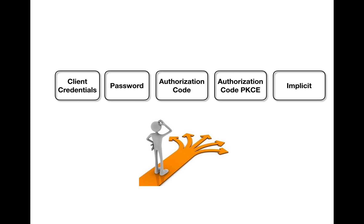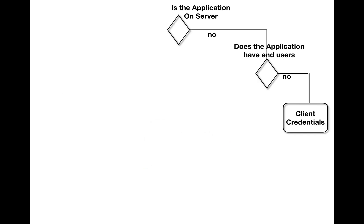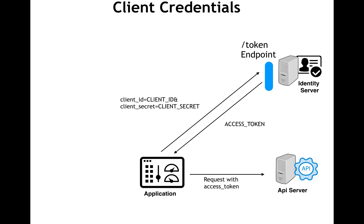So which grant type you use depends on the kind of application. The four types of applications we classified need different grant types depending on the context of usage. I created a small flowchart to help you make that decision. The first category is whether the application is running on the server — not on the client or the user's machine. The second classification is whether it does not have end users, meaning we are talking about background applications.